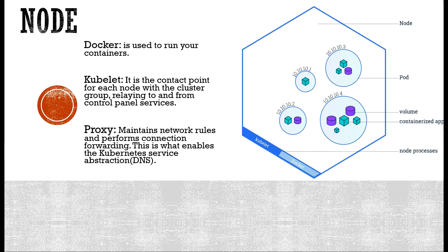Now let's look at the node. Nodes also have important components inside them. The first is Docker, used to run your containers. The second is kubelet — the contact point for each node with the cluster, relaying information to and from the control plane services. The third is the proxy.